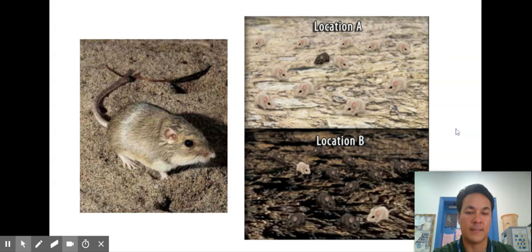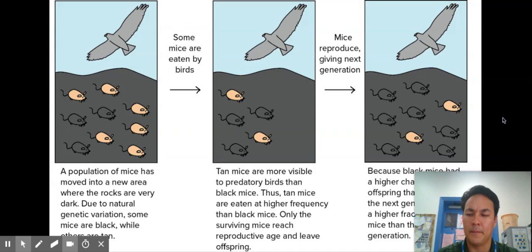Here it is written out and this is from Khan Academy so a population of mice moved into a new area rocks are very dark. So due to natural genetic variations some mice are black while others are tan and so that's showing you like it has to have something that can be passed on it has to have a genetic component to it. I know we haven't done genetics yet so this might be tough for you but many of you have had our primer on that in middle school.